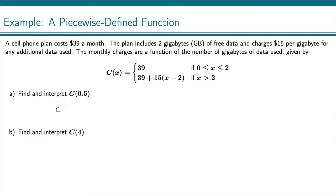So C(0.5). Now x in this case is 0.5, and 0.5 is between 0 and 2. So we just use this definition of the function C(x) in order to get C(0.5), and we get 39.